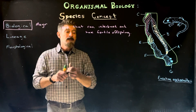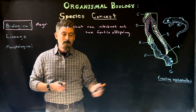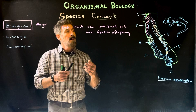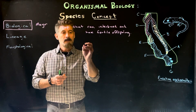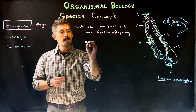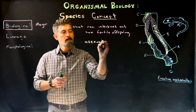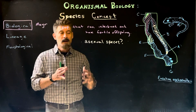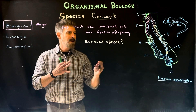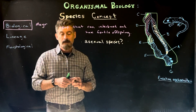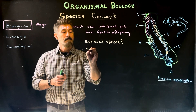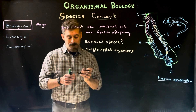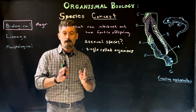The biological species concept has some problems with it. This is the most widely used and accepted definition for species in biology, but it's based on reproduction. So what about all the species that reproduce asexually, or organisms that have alternative methods of reproduction? They don't fit in here.